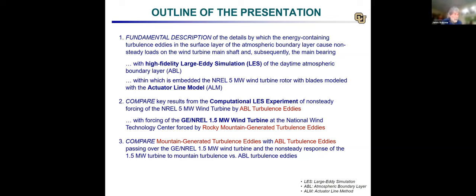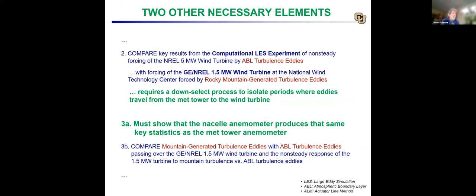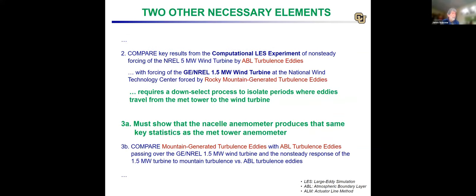We want to compare the statistics from the mountain-generated eddies with the atmospheric boundary layer turbulence eddies — from the computations and by examining the flow along the mountains where mountain eddies are not forming. We compare all three cases to validate key results from the computational experiment and make generalizations about the interaction between atmospheric turbulence and wind turbines in general. The data from the 1.5-megawatt turbine at the NREL site requires a down-select process, and we also need to validate the nacelle anemometer against the Met tower anemometers.